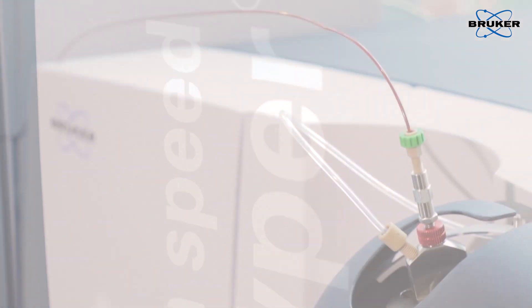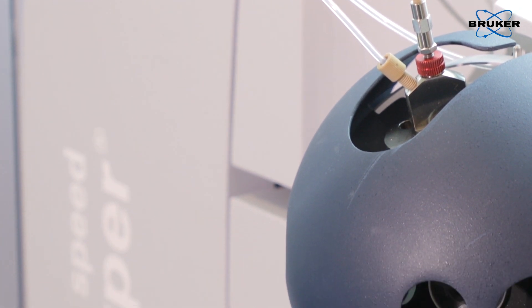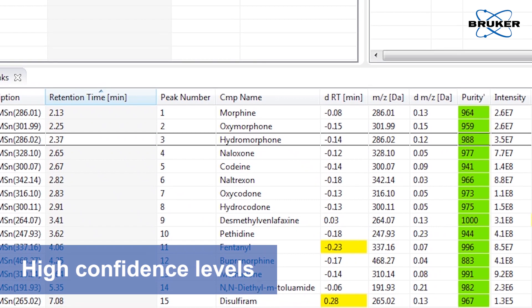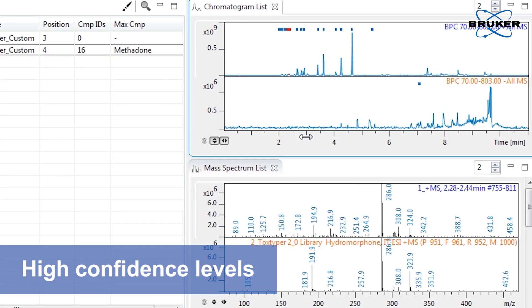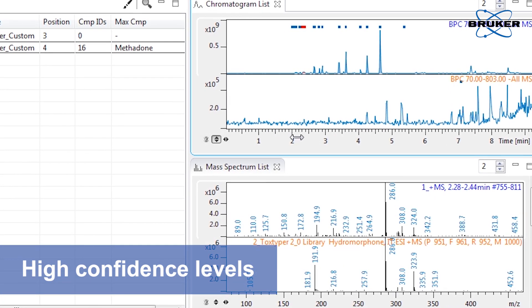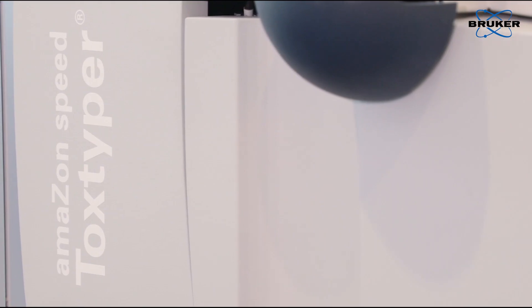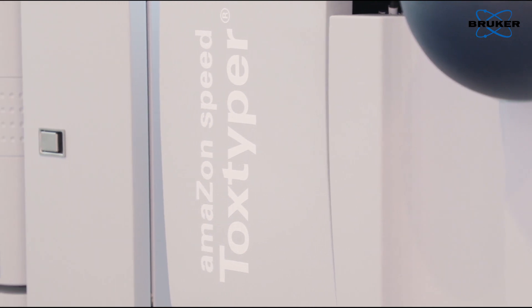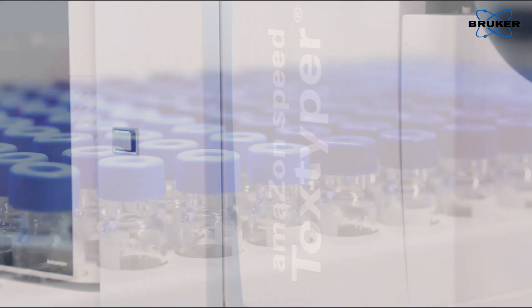Toxtyper is an ion trap instrument that goes a step further than conventional MS-MS analysis. While tandem mass spectrometry with a single collision cell is a trusted analytical technique, the ion trap system delivers results with an even higher level of confidence by performing a series of consecutive fragmentations for select analyte ions.